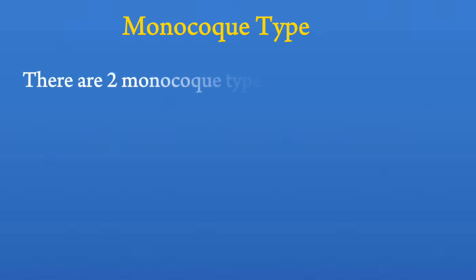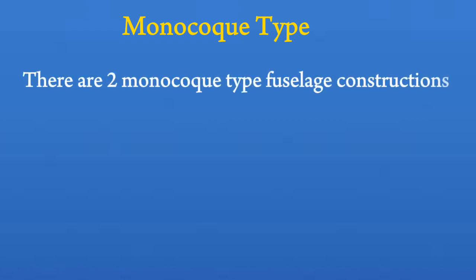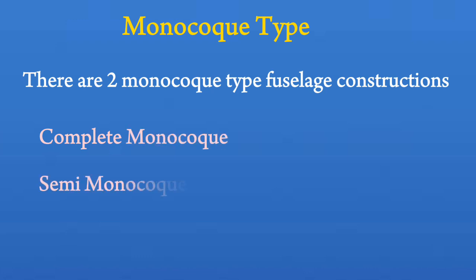Monocoque type. There are two monocoque type fuselage constructions: complete monocoque and semi-monocoque.